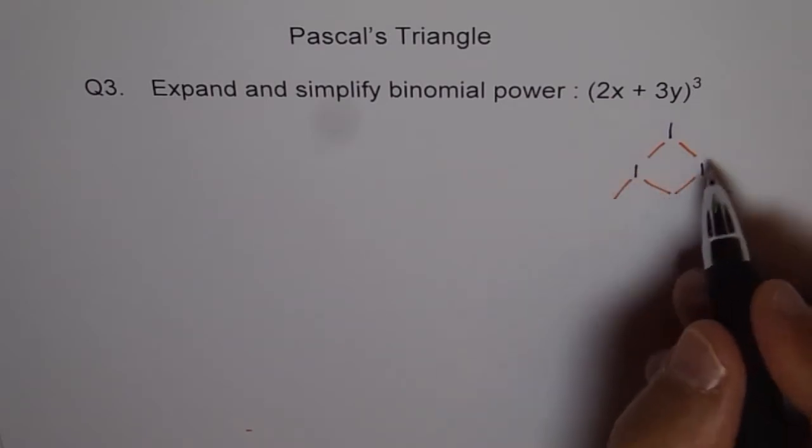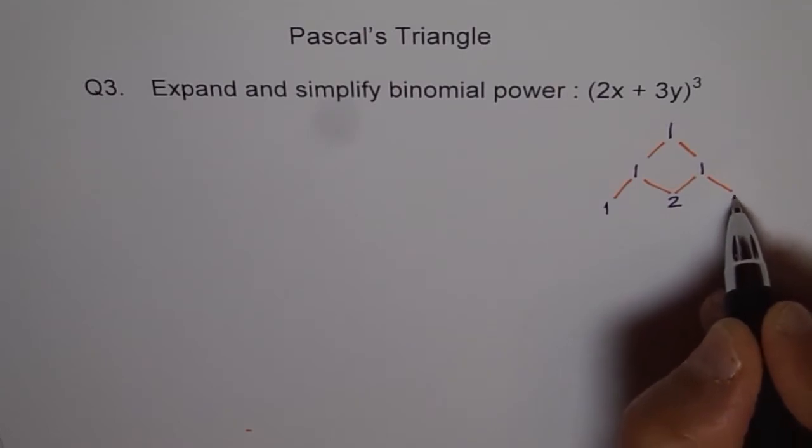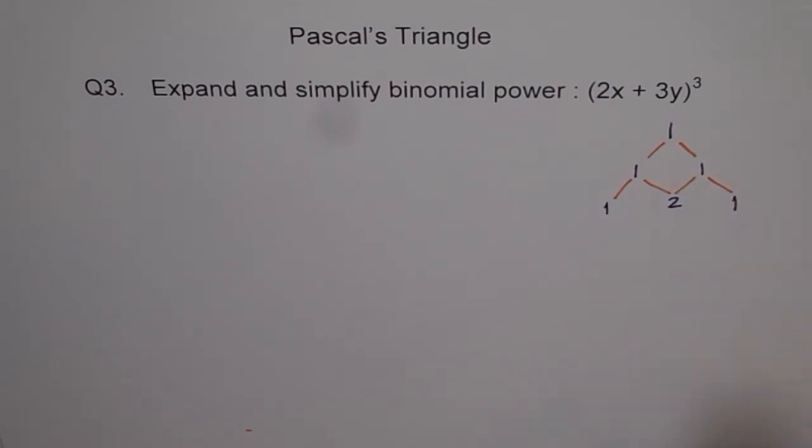One from this side, the other one from here. So we get 2 here, 1 here and 1 here. And this is our third row.